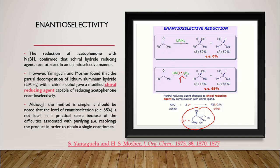When acetophenone is reduced using lithium aluminum hydride, we end up with 50% S isomer and 50% R isomer, and the enantiomeric excess is 0%. Whereas when a chiral modified lithium aluminum hydride is used, one isomer predominates and we end up with an enantiomeric excess of 68%. Although the method is simple, the enantioselection of 68% is not ideal in a practical sense because of the difficulties in purifying, i.e. resolving the product, in order to obtain a single isomer.